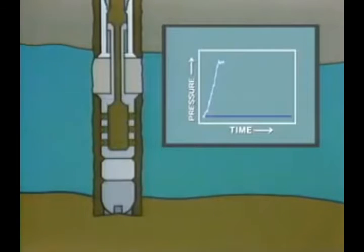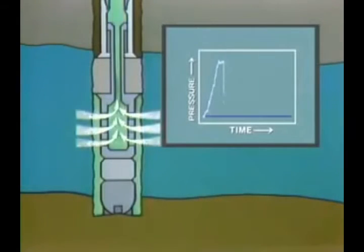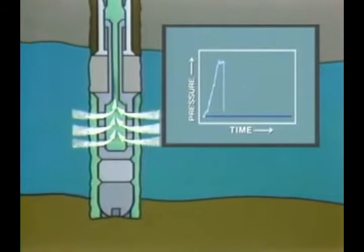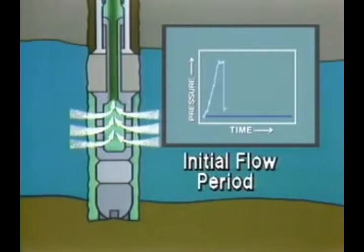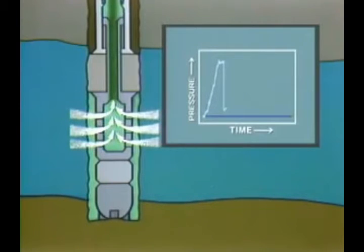A flow valve is then opened, and the formation fluids are free to flow into the low pressure drill pipe. As fluids fill the drill pipe, the pressure increases. This is the initial flow, or pre-flow period, and is usually of short duration, typically 5 to 10 minutes. Its purpose is to relieve any buildup in pressure that may have occurred in setting the packer or packers, or any supercharging of the reservoir due to mud filtrate invasion.